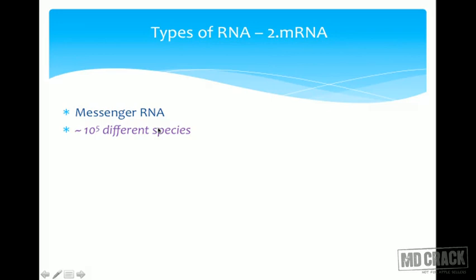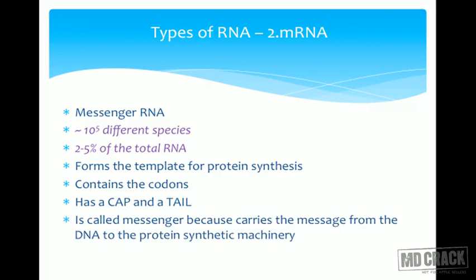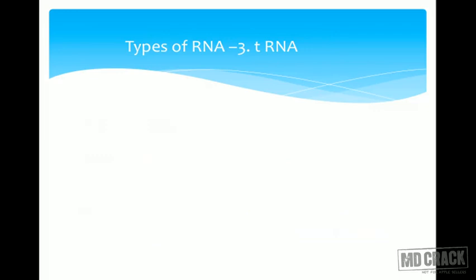The second type is mRNA, messenger RNA. There are nearly 10 to the power of 5 different species of mRNA. It forms only 2 to 5 percent of the total RNA — so mRNA does not form the bulk of RNA. It serves as the template for protein synthesis because it contains the codons. It has a cap and a tail, and it is called 'messenger' because it carries the message from DNA to the protein-synthesizing machinery.